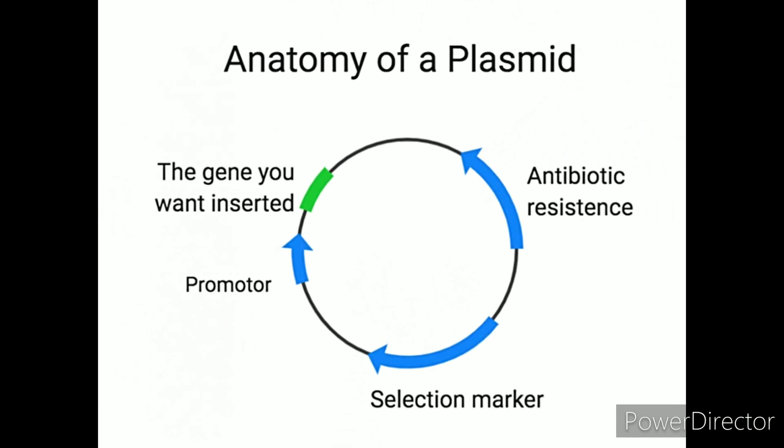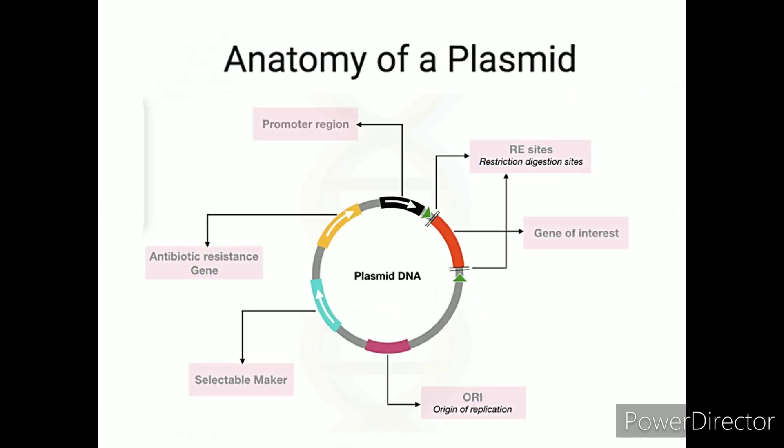Anatomy of plasmid. A plasmid contains a promoter region, a restriction digestion site, a gene of interest, an origin of replication, a selectable marker, and an antibiotic resistance gene.